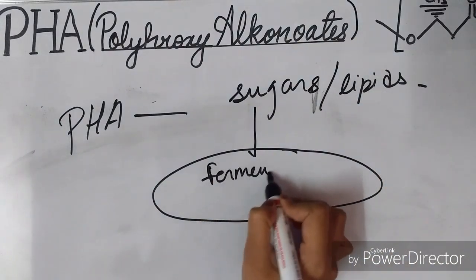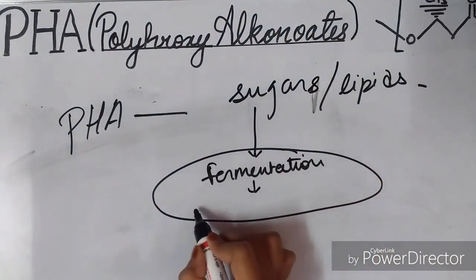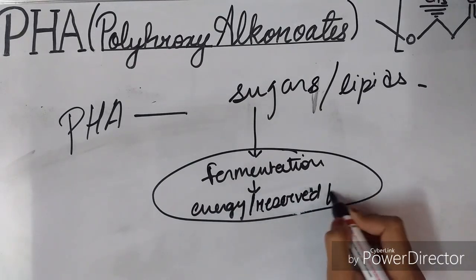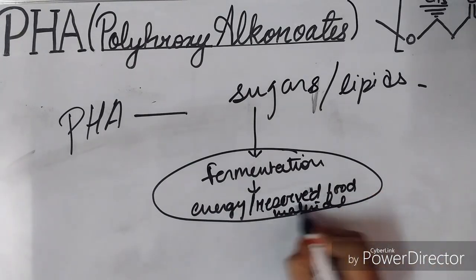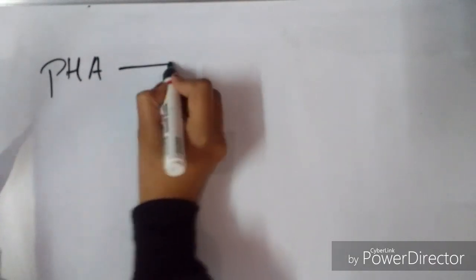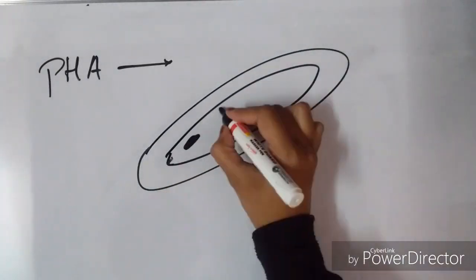This PHA, after the fermentation of sugars and lipids, gets accumulated in the bacterial cell and is stored as energy or reserved food material. Basically, the bacteria produce PHA to store it as carbon or energy.